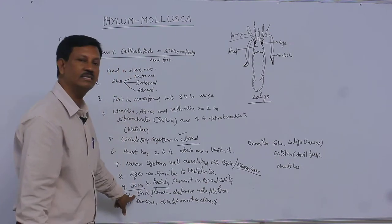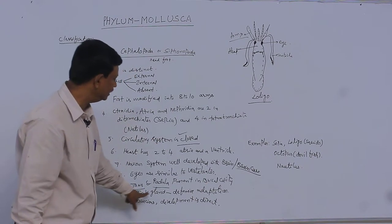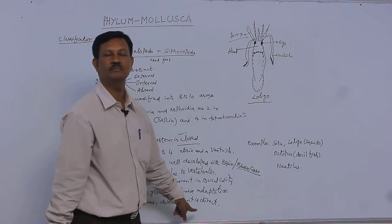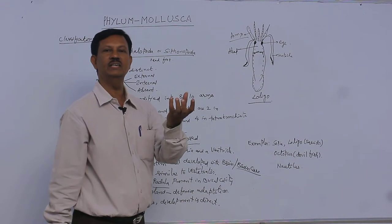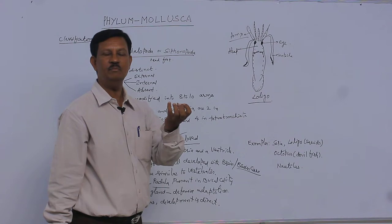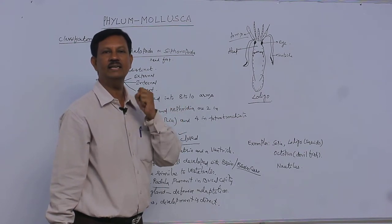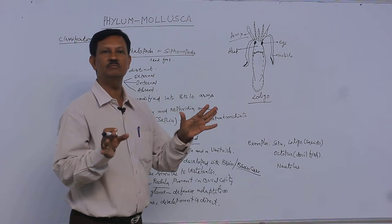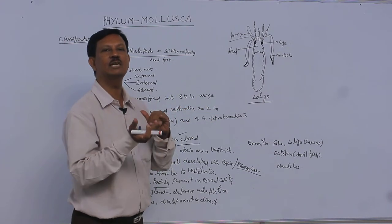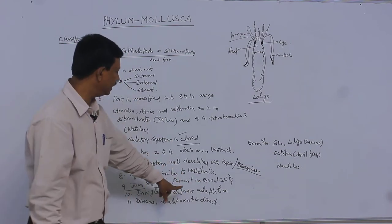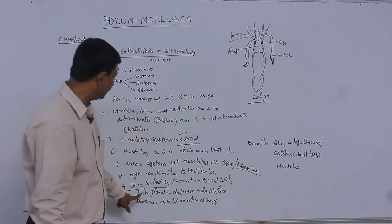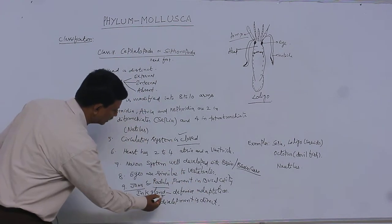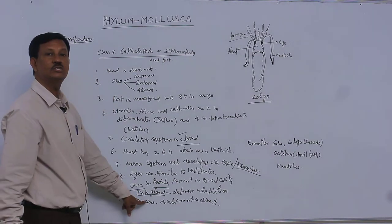Ink glands are present in some animals as a defensive adaptation. This gland is filled with ink. If any enemy comes near to the organism, immediately they pour the ink, and when the entire atmosphere becomes dark, then it easily escapes from that place. That's why it is known as a defensive adaptation. Ink glands are present in some animals. The fluid is similar to ink, that's why it is known as the ink gland.